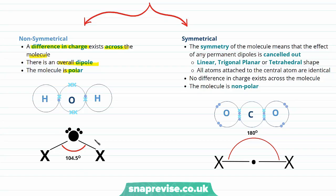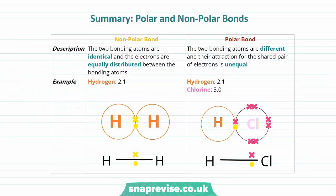In a symmetrical molecule, the symmetry means the effect of any permanent dipole is cancelled out. Linear, trigonal planar, or tetrahedral shapes are all symmetrical when all atoms attached to the central atom are identical, so no difference in charge exists across the molecule and it is non-polar despite containing polar bonds. Carbon dioxide is an example - the bonds between carbon and oxygen are polar, but the molecule takes a linear shape and the two bonds are symmetrical, so the effect of any permanent dipole is cancelled out.